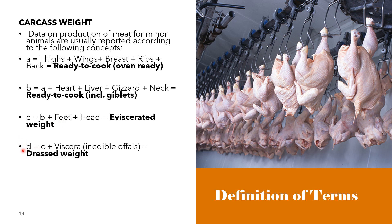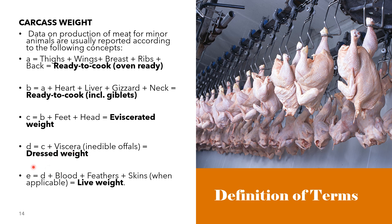Letter D includes all of Letter C plus the viscera or inedible offals, collectively known as the dressed weight of the chicken or minor animals. Letter E includes all of Letter D plus the blood, feathers, and skins, collectively known as the live weight of the bird.